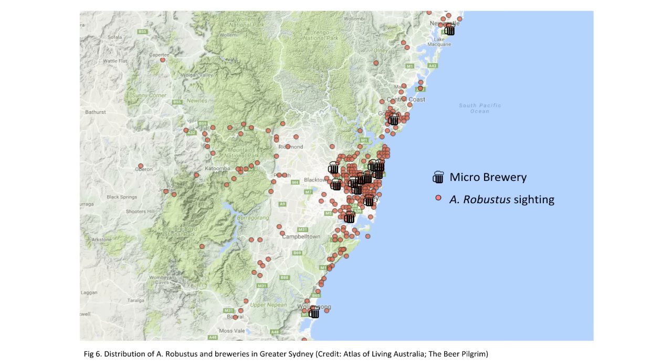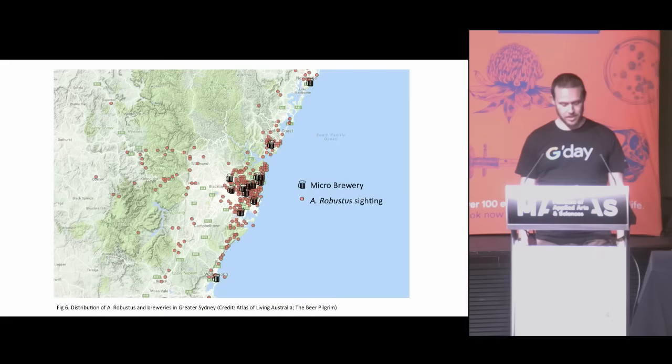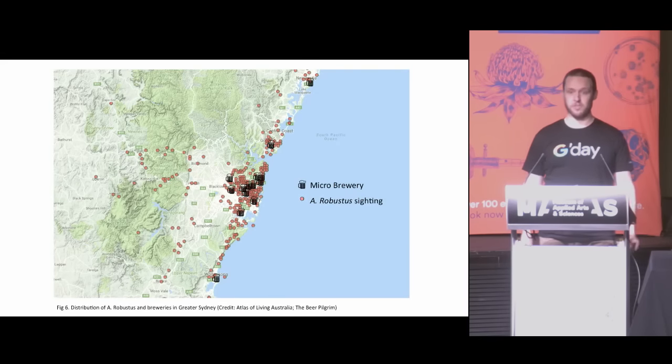Finally, what are the public policy implications of this work? I think we should all be very concerned about the so-called craft beer revolution. You can see there's a very strong correlation — this is real data, by the way — between atrox-buster sightings and craft breweries in the greater Sydney area. Hipsters drinking bottled beer are directly responsible for a frightening rise in spider numbers.